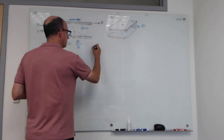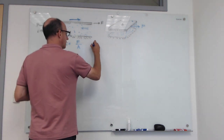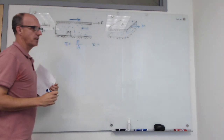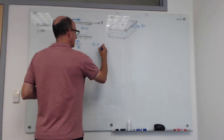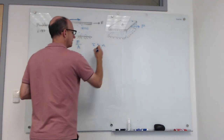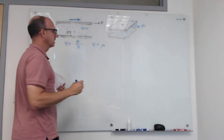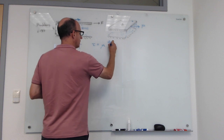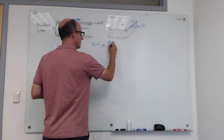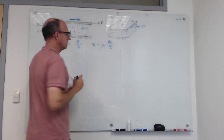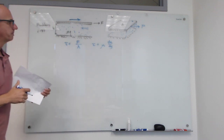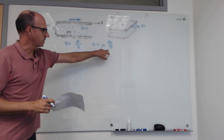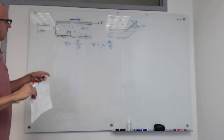The other key idea is Newton's law of viscosity, which says that the shear stress in any liquid is given by the viscosity of the liquid times the strain rate, which can be written as du/dy. So what does du/dy represent?